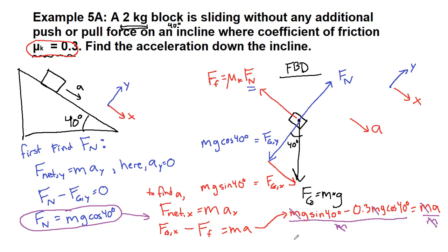Again, this is only true if there is no additional push or pull force. All right, so what we have now, I'm going to plug in the 9.8 for g, but we do have everything we need to solve this. So 9.8 sine 40 degrees minus 0.3 times 9.8 cosine 40 degrees is our acceleration, and all of that can be plugged into a calculator now.